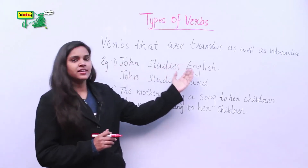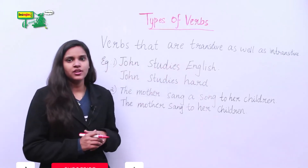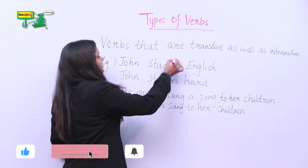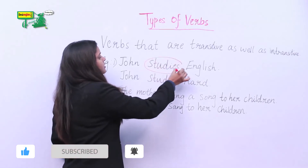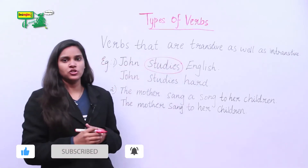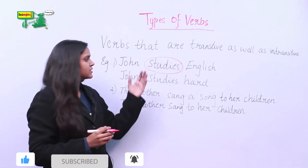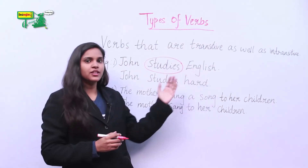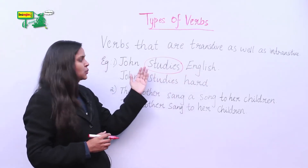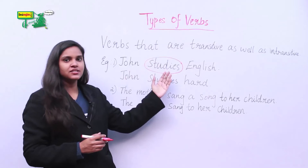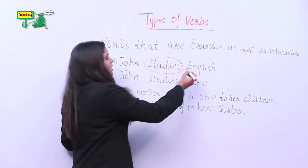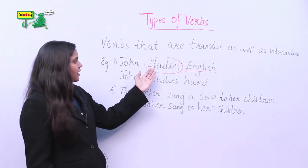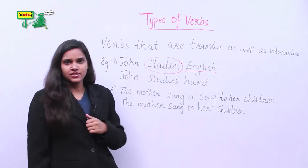John studies English. Here our verb is 'studies'. When we put up the question 'what?' — studies what? — the answer is English. Therefore, in this sentence the verb 'studies' takes up the direct object 'English'. So this is our transitive verb.